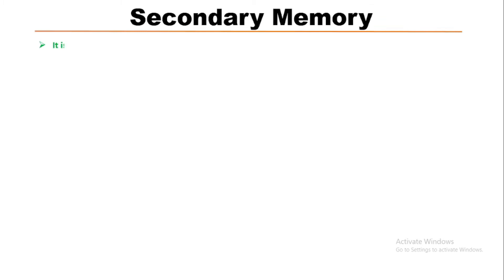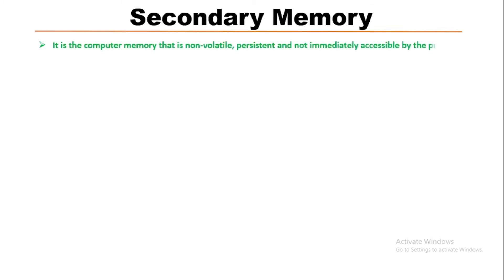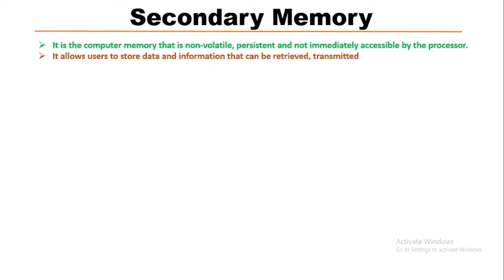In this video we will learn about the secondary memory. Secondary memory is the computer memory that is non-volatile, persistent, and not immediately accessible by the computer processor. It allows users to store data and information that can be retrieved and transmitted.